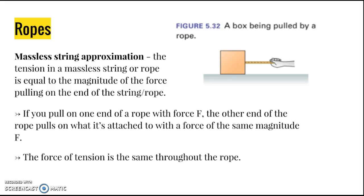Another form of interacting objects involves ropes. An example would be an object being pulled by a rope, giving a tension force acting to the right. When dealing with ropes, strings, and cables, we use the massless string approximation — the tension in a massless string or rope equals the magnitude of the force pulling on its end. If you pull on one end with force F, the other end pulls on what it's attached to with the same magnitude F, and the tension is the same throughout the rope.